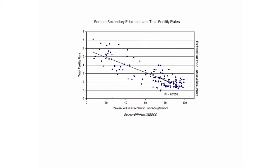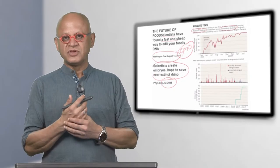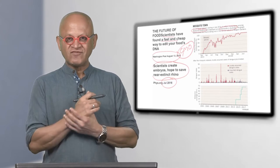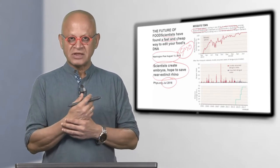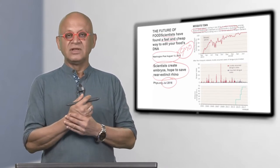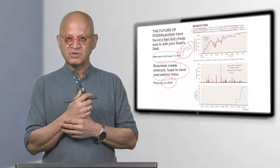What is the use? If you look at the statistics of the total fertility rate versus percentage of girls enrolled in secondary schools from UNESCO data, you can see that as the percentage of girls enrolled in secondary school goes up, the fertility rate drops. It has been known for some time that educating girls is one of the best contraceptives.